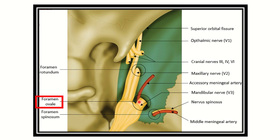Through the foramen ovale, two important structures are shown in this picture. One is the mandibular nerve, which is V3 — the third branch of the trigeminal nerve. We can also see the accessory meningeal artery.